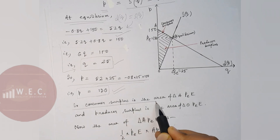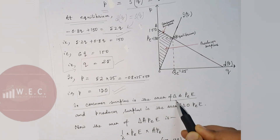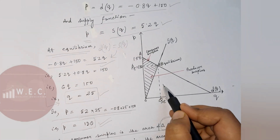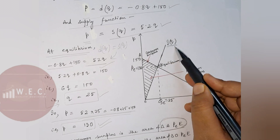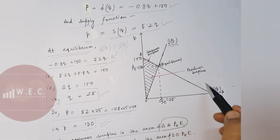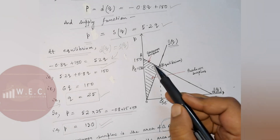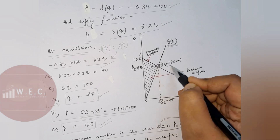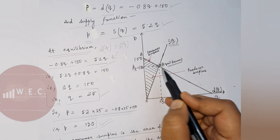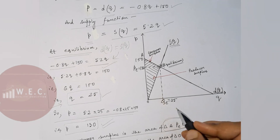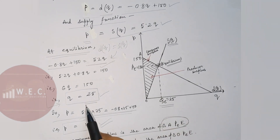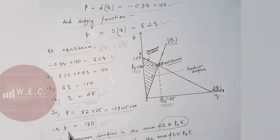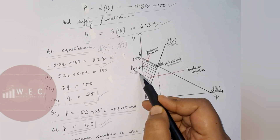Consumer surplus is the area bounded by the equilibrium price and the demand curve — that is, the triangle ApeE. Please see the diagram: this is the supply function and this is the demand function. I have drawn these two lines according to the equations given. The intersection point E is the equilibrium, with equilibrium price 130 rupees and equilibrium quantity 25 units.